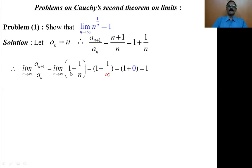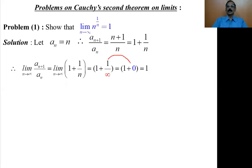We apply the limit. Since 1 is purely constant, we write 1 as it is. When we apply the limit to the second term 1/n, as n tends to infinity, n is replaced by infinity. So it equals 1 plus 1/infinity. Since 1/infinity tends to 0, it is nothing but 1 plus 0, which equals 1.